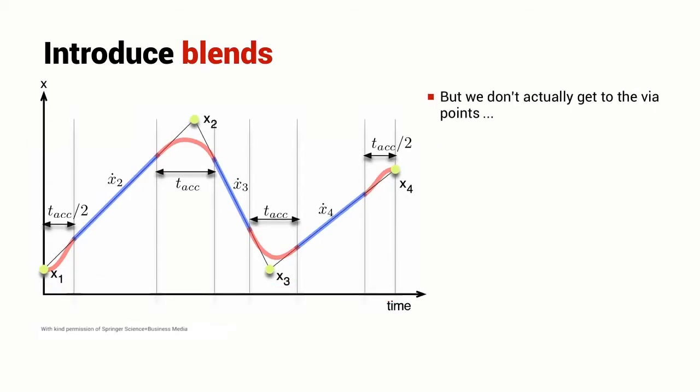Of course you probably noticed by now that the robot isn't actually getting to the via points. It's getting close to x2 and then it's going to turn to get onto the path to head towards x3. So it misses x2 and it actually misses x3 as well.